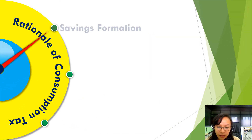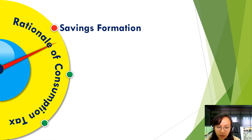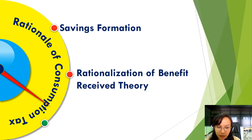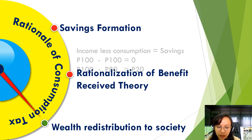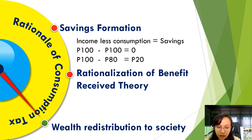The rationale of consumption taxes are as follows: savings formation, rationalization of benefit-received theory, and wealth redistribution to society. In savings formation, the more consumption a person consumes, the lesser savings left.